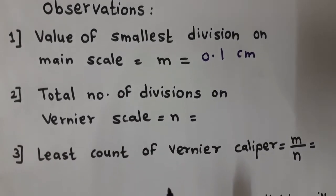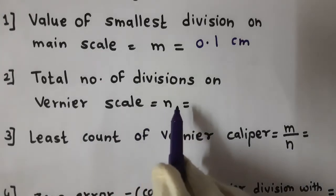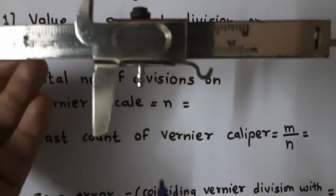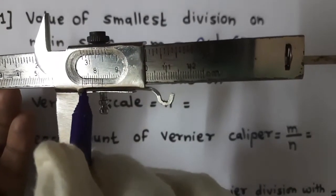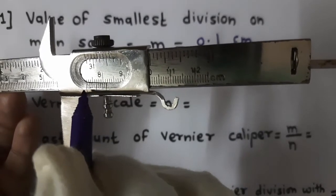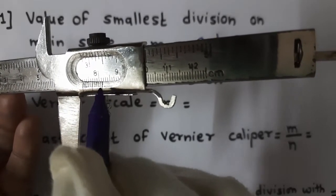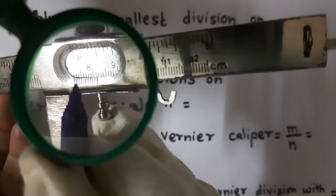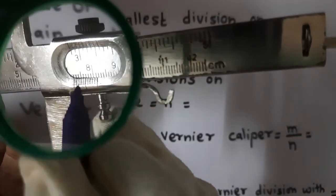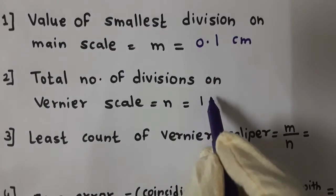Now see the second observation: total number of divisions on the Vernier scale. Observe the Vernier scale — counting the divisions: 1, 2, 3, 4, 5, 6, 7, 8, 9, 10. So there are total 10 divisions on the Vernier scale.